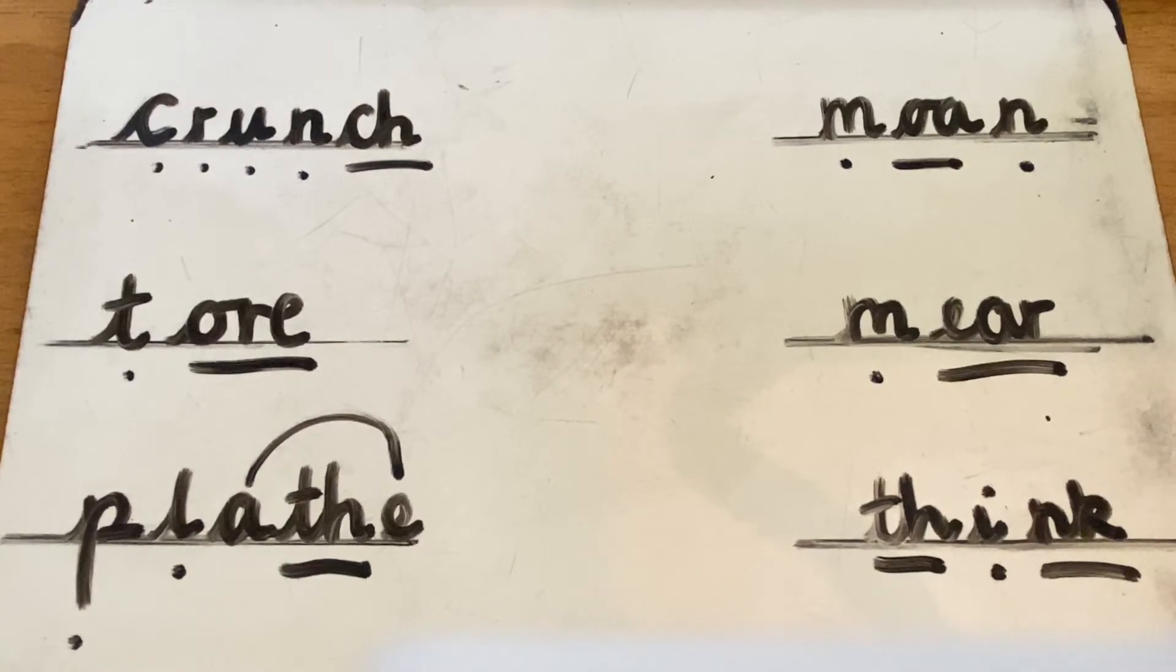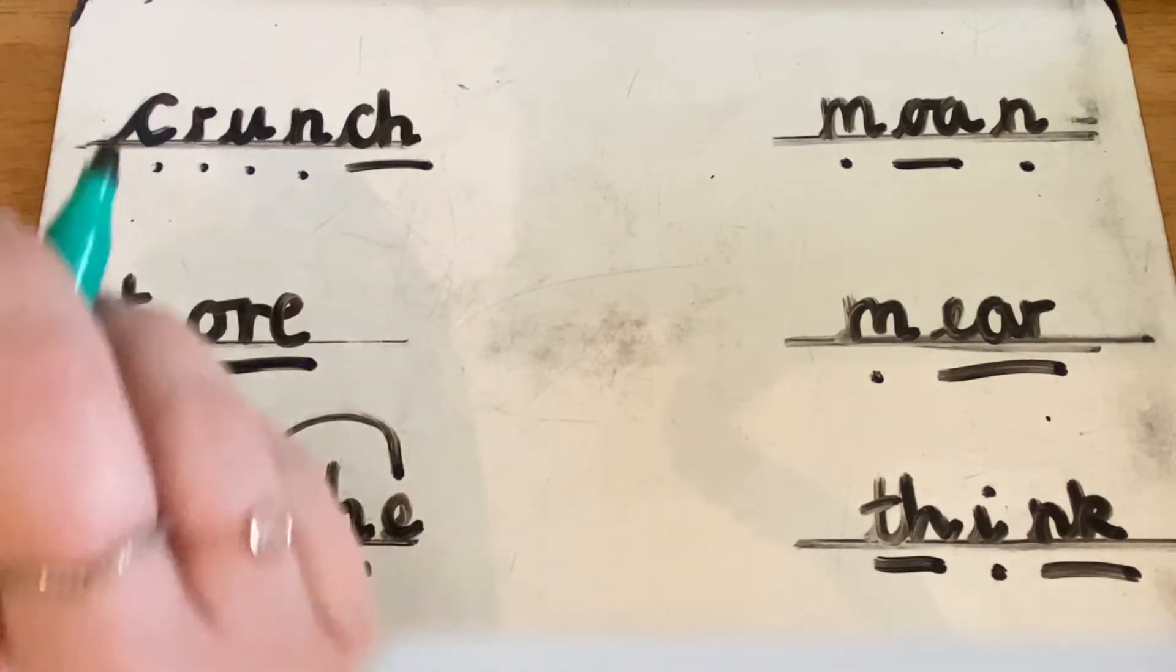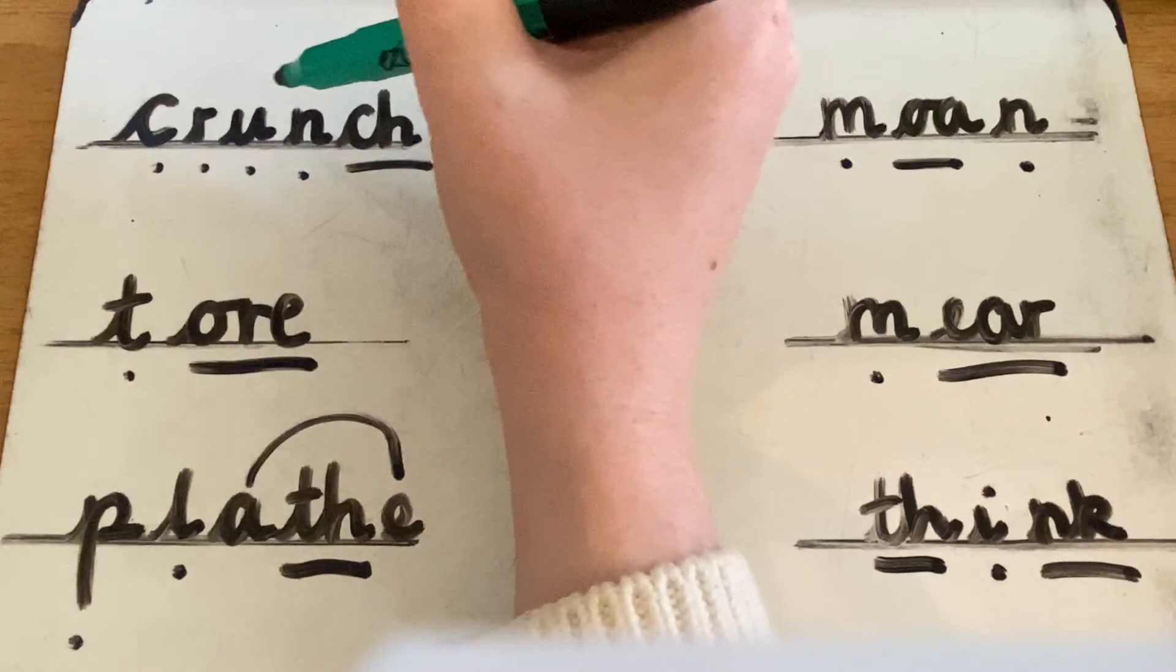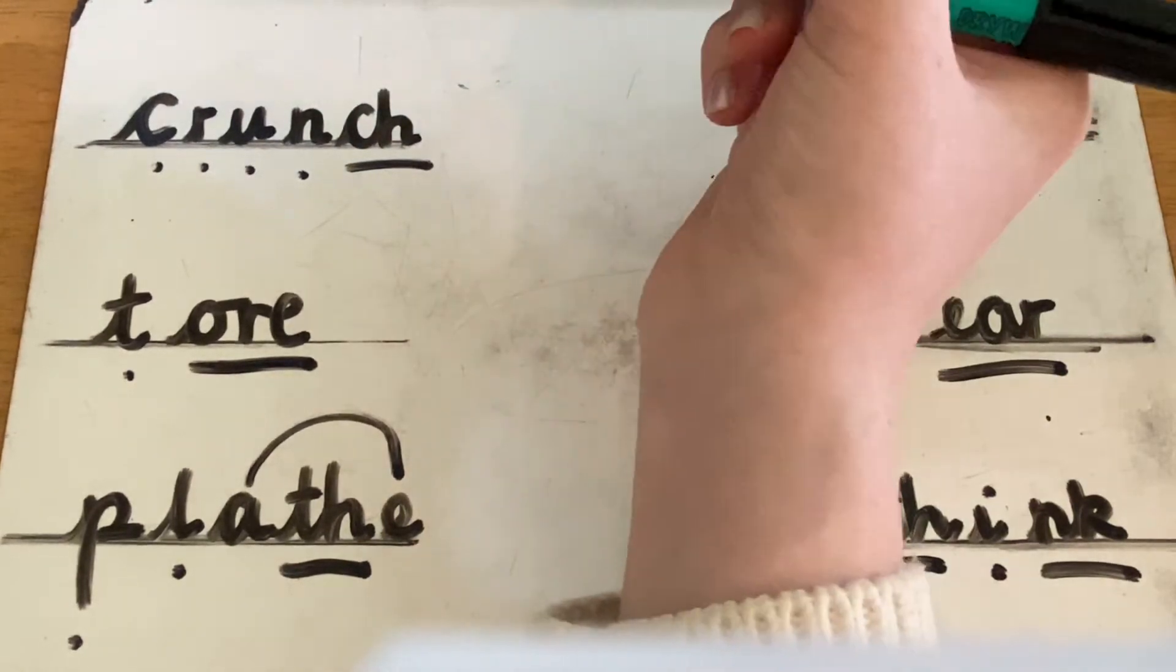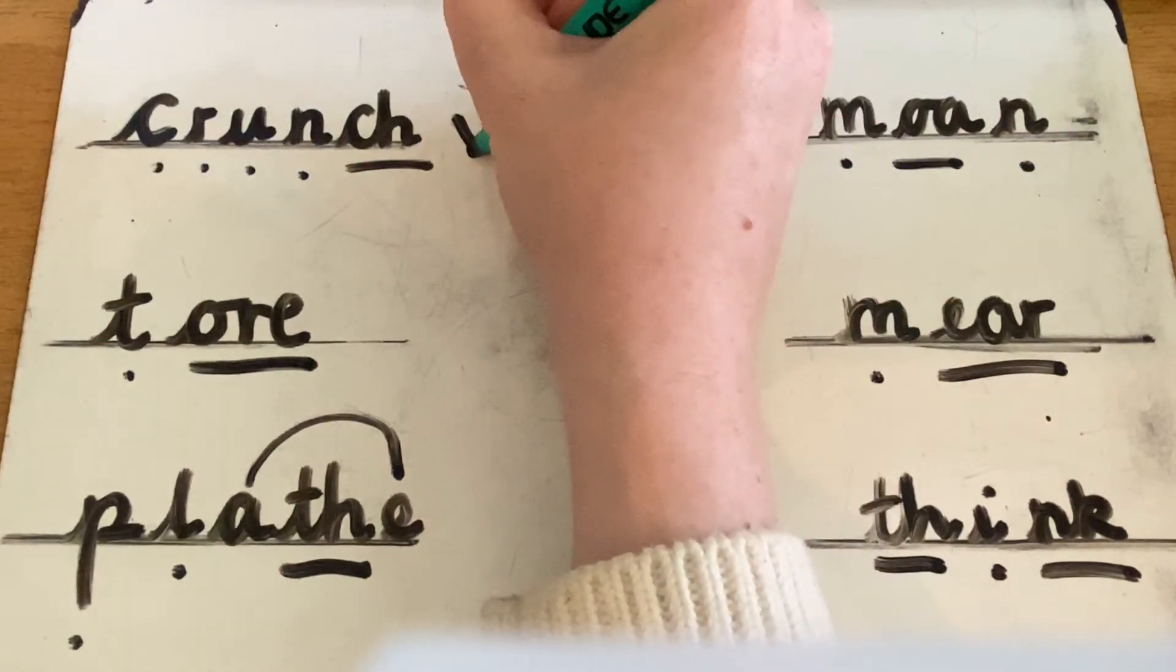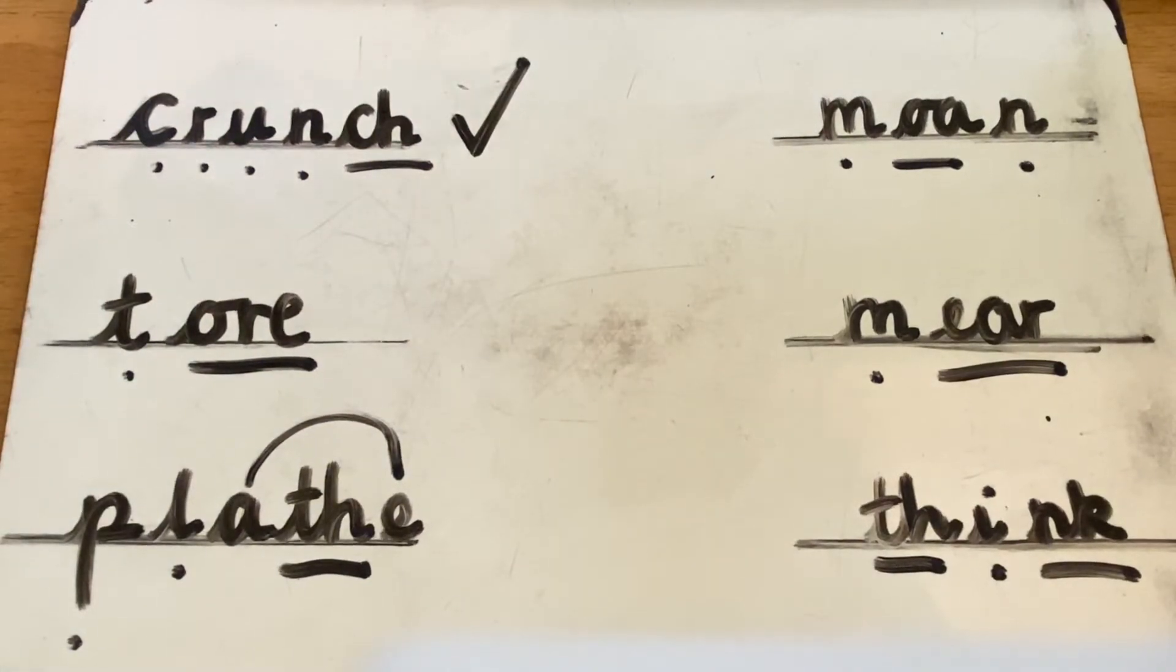And let's think about what words are real and what words are alien words. So, C. R. A. N. Ch. Crunch. That is a real word. You might eat something that has a good crunch to it, or it's crunchy, like a crunchy crisp.